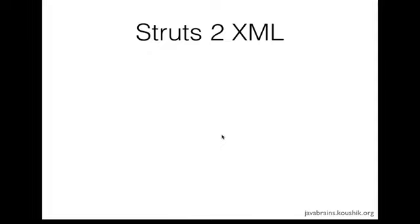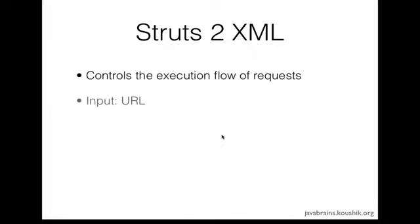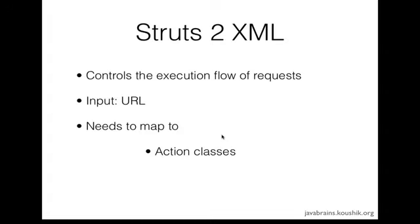Depending on the URL, the right servlet and the right method of that servlet is called. Struts.xml does something similar, but here we don't have servlets — we have action classes. So struts.xml controls the execution flow of the request and maps an input URL to action classes. The primary goal is to take the client's input URL, map it to a particular action class, and execute its method to serve the request. Struts.xml also maps to JSPs, which we'll look at in a few minutes.